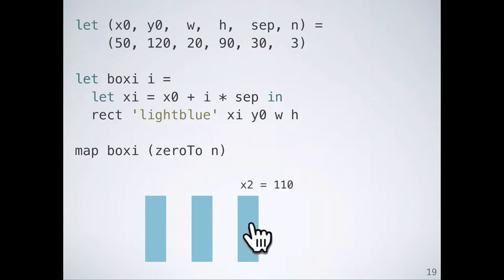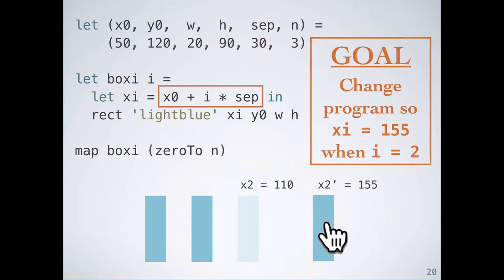Now, suppose the user drags the third box from its initial x position of 110 over to a new x position of 155. We need to update the program to match. In particular, we need to synthesize a new program such that this expression for xi evaluates to 155 when the index is 2.